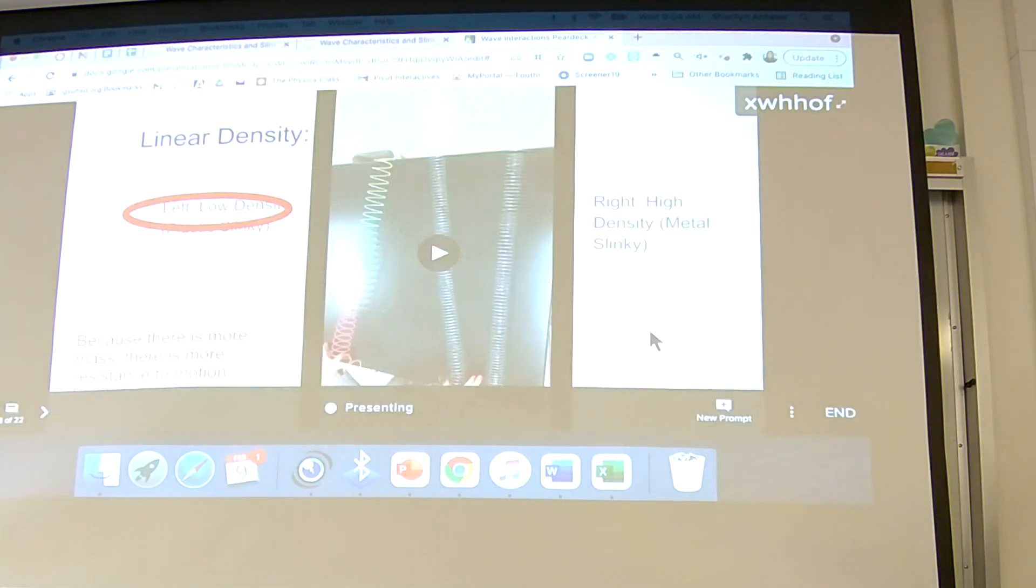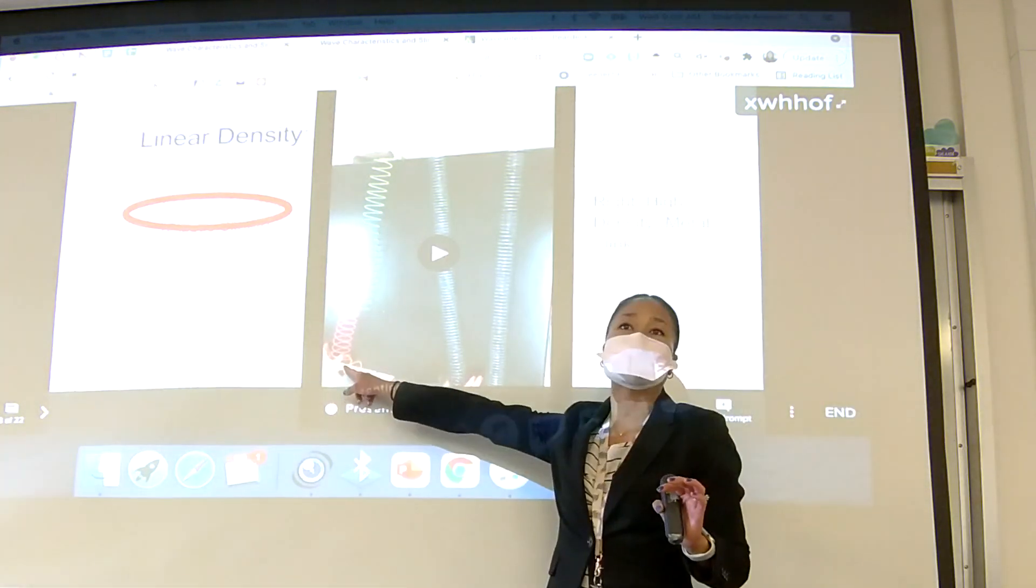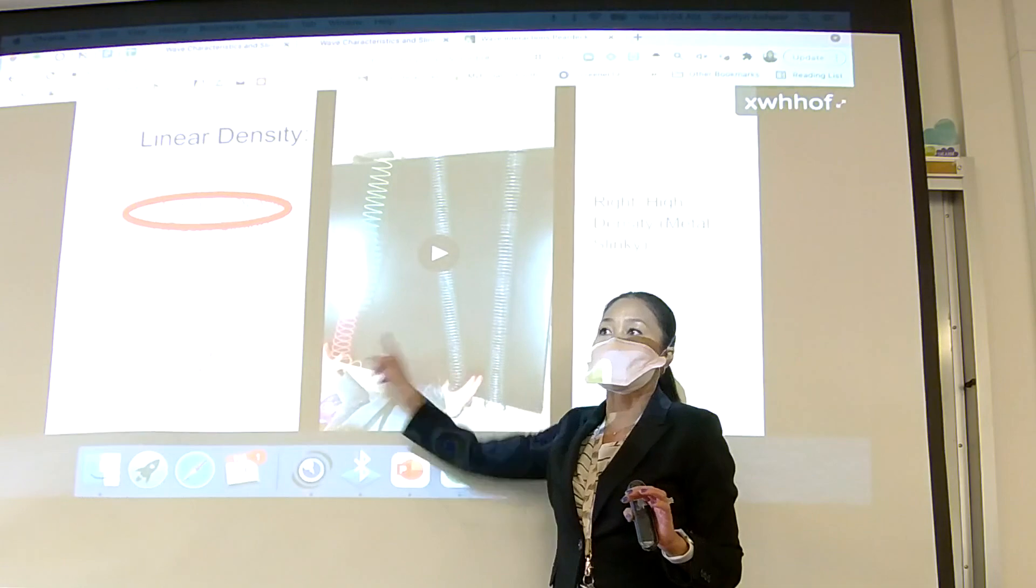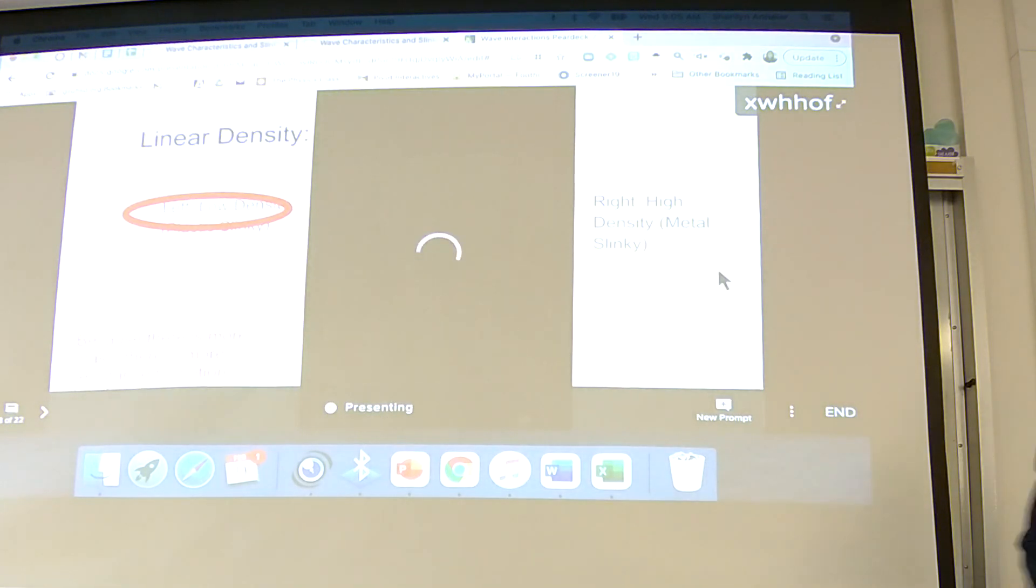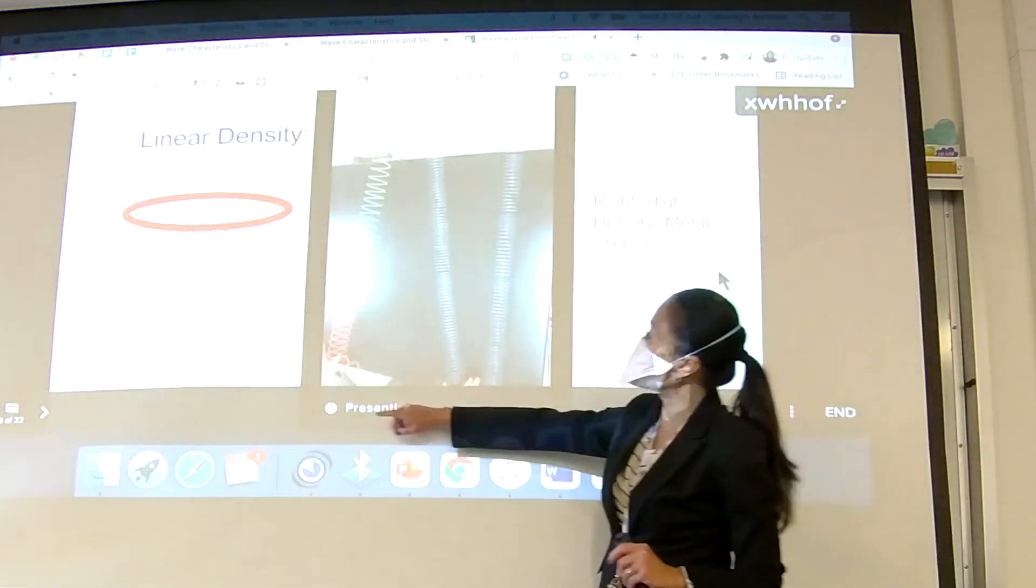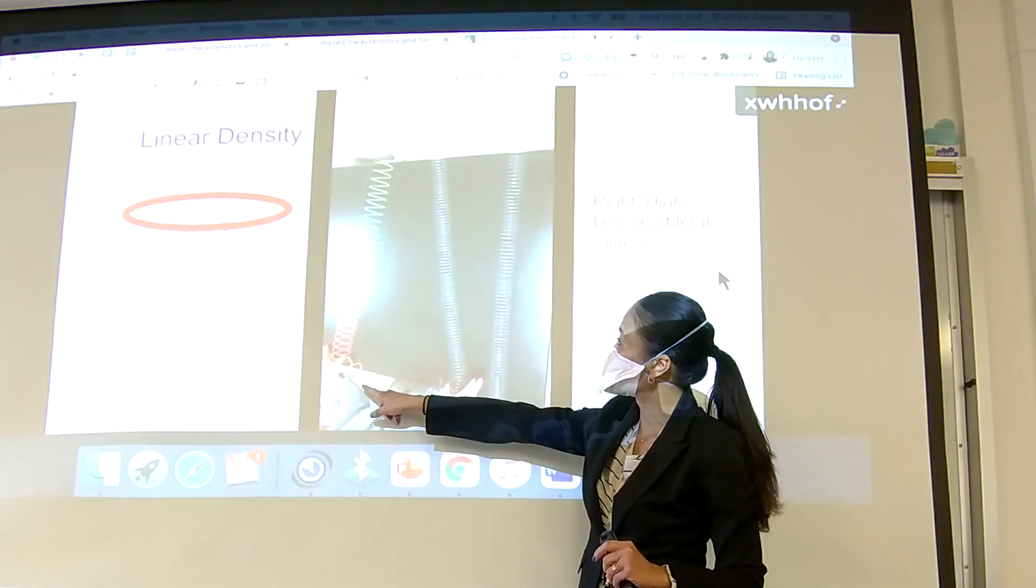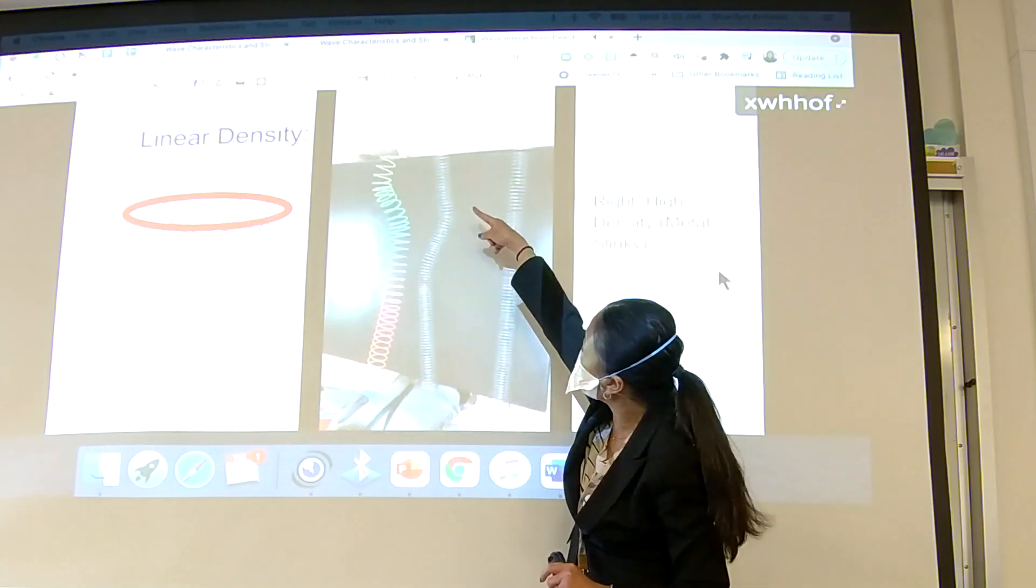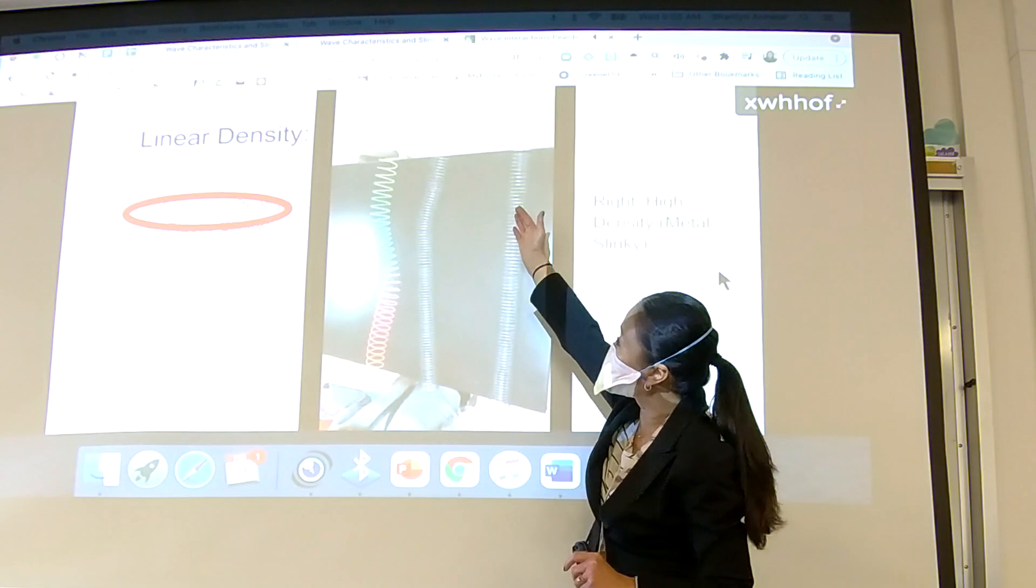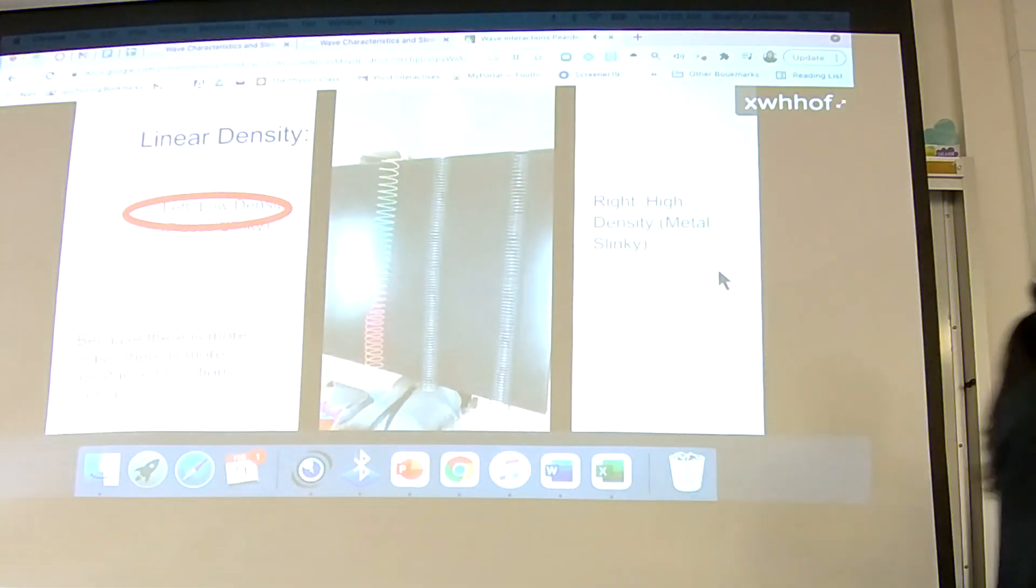Let's actually watch the video for this. We've got, this one had a little bit more room for error because you had to make sure that the tension was equal. So you really had to tighten up that plastic slinky. If you did set it up correctly, you should have seen that the plastic, which is low density, is going to hit the end faster. By a little bit, but it is going to hit the end faster than the high density.